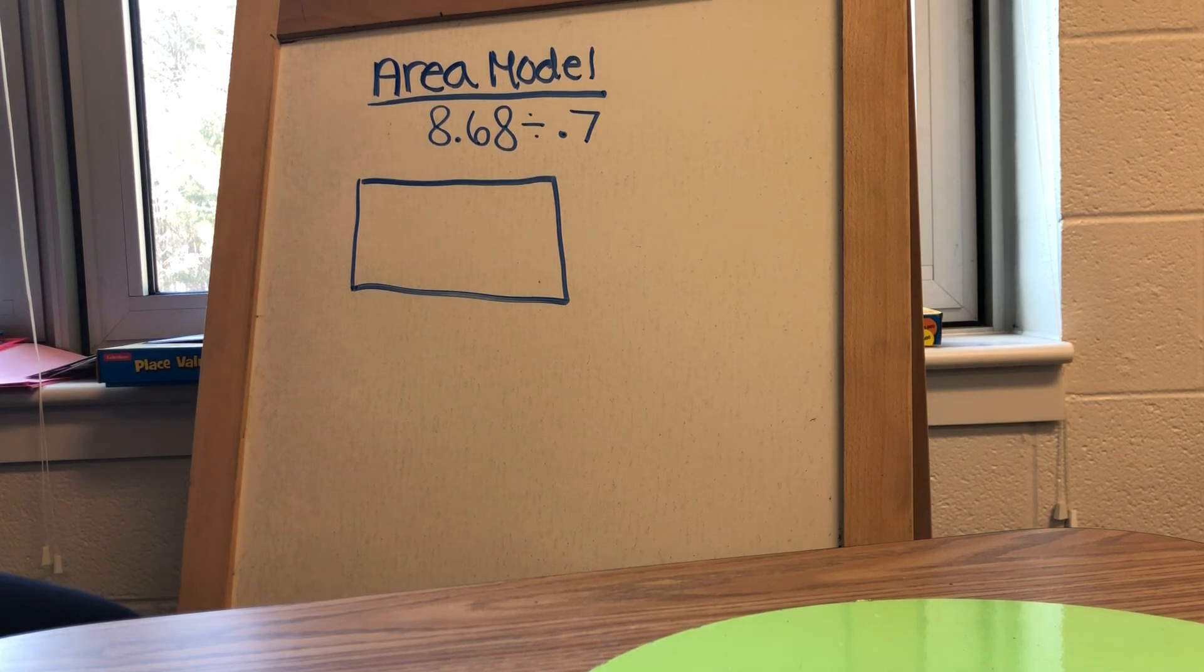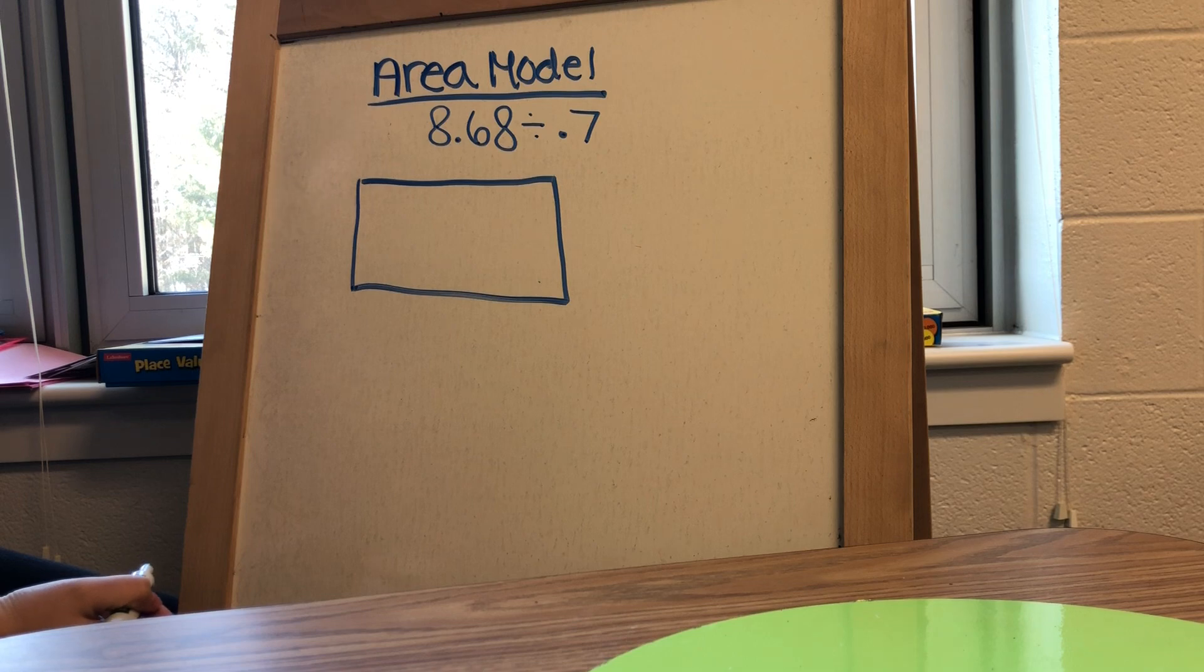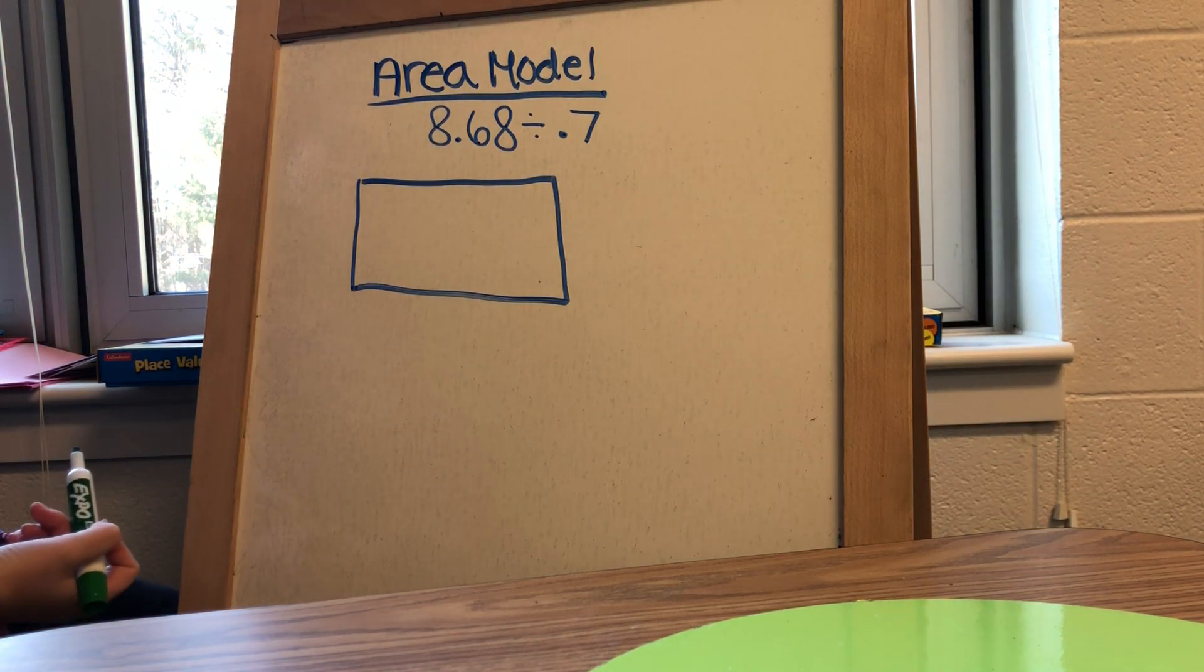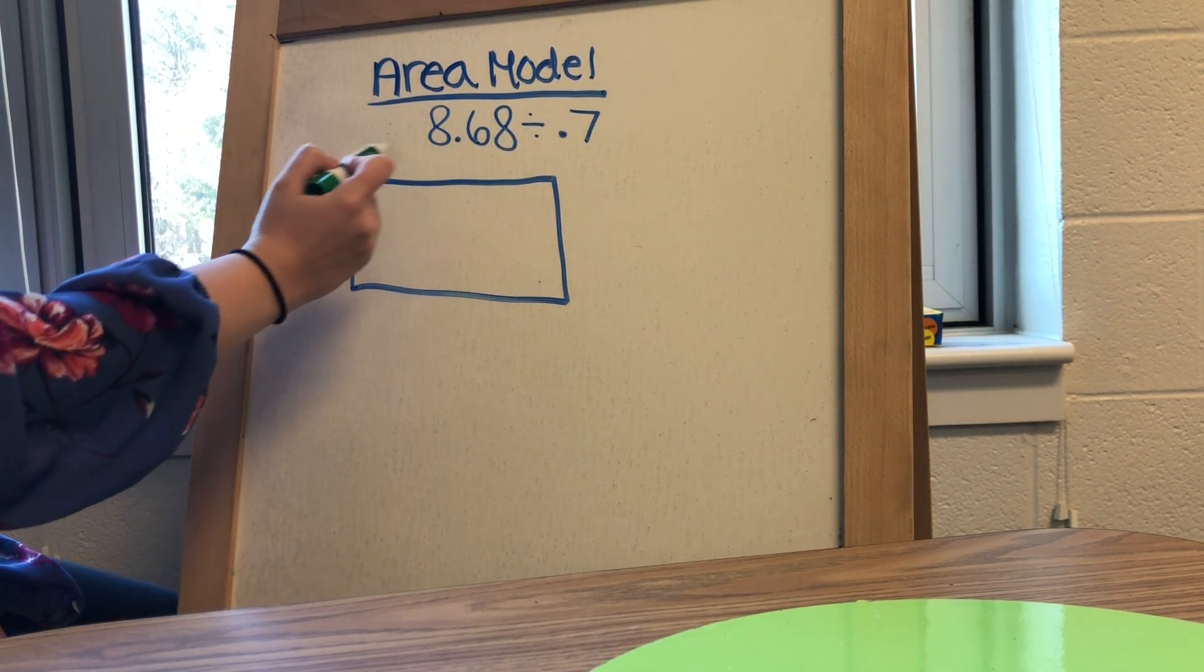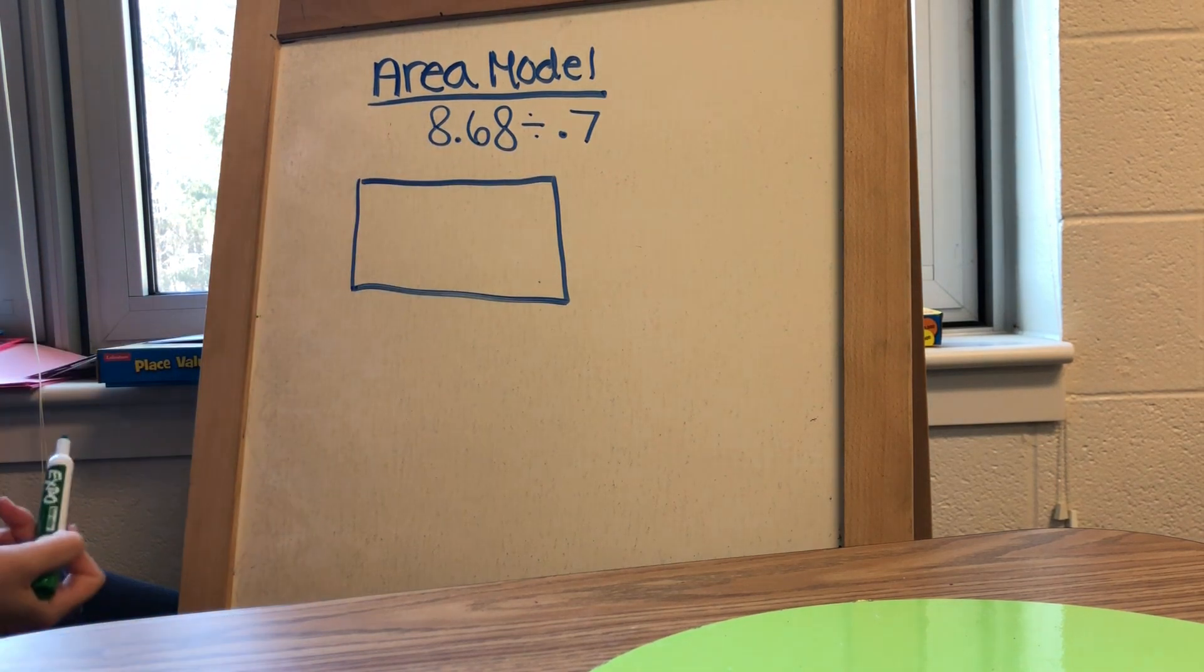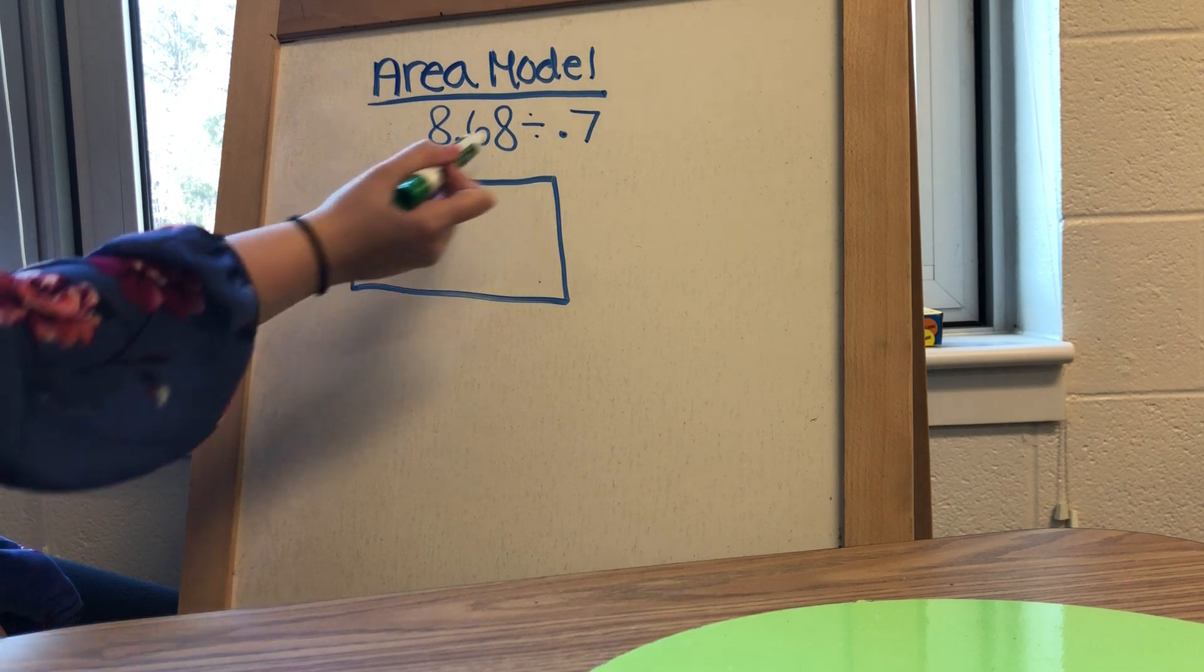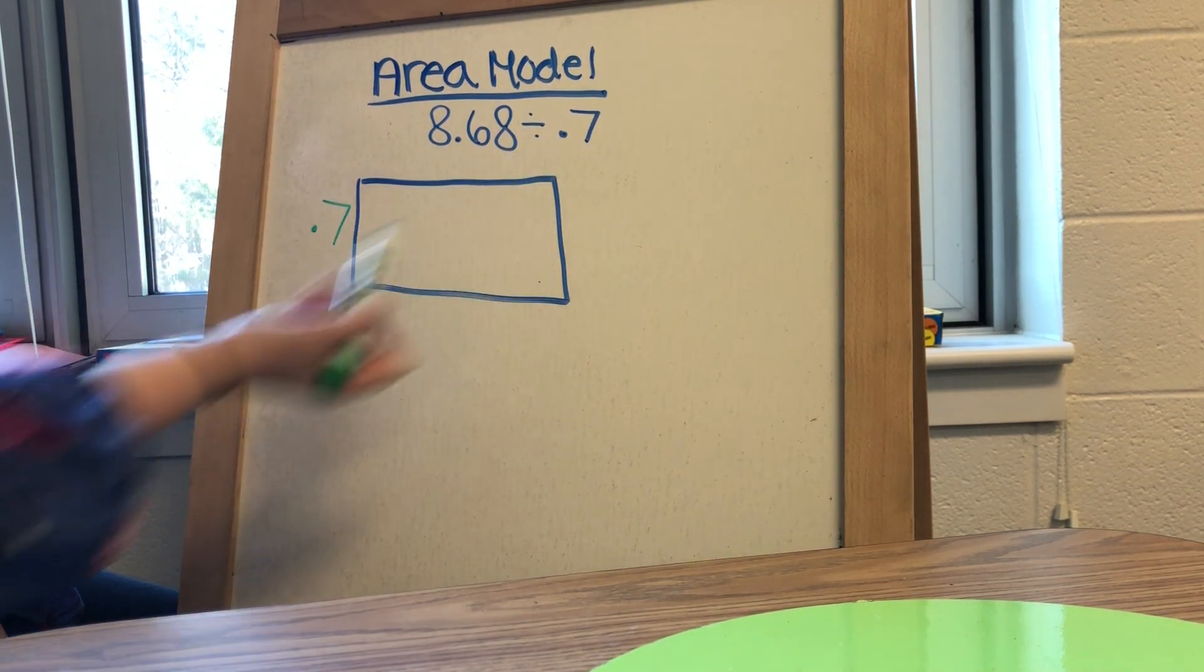One of the strategies that you can use to divide two decimal numbers is an area model. So like all area models, we're going to start with a box or an area. The difference between a multiplication area model and a division area model is that in division, you don't have the numbers that are going to be up top. Instead, you have one number on the side, which is your divisor, which in this case is 7 tenths.